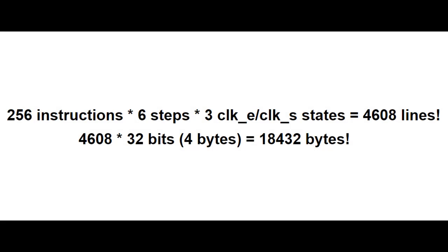So 4,608 times 32 bits (4 bytes) is 18,432 bytes. It's possible to optimize — for example, the lines for steps 1, 2, and 3 are identical for each instruction, so we could put them in a different table, giving us 9,216 bytes, which is still pretty big. By creating rows for only clock E and clock S and ORing them together when both are on, we can bring the table down to 6,144 lines. That is many times more RAM than we have in our CPU, which is only 256 bytes.